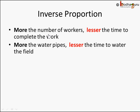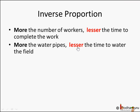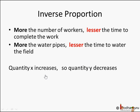Let me take this example. Say you are doing some work. If you have three people to do it, it will take some time. If you had six people, will it take more time or less time? It will take less time. Same way, if you had one pipe, it takes some amount of time to water the field. If you had two water pipes, you can finish it in half the time. So more the pipes, lesser the time. More the number of workers, lesser the time to complete the work. More is the speed, lesser is the time to travel — more is the speed of the car, lesser is the time to travel. So in these examples, quantity X increases and quantity Y decreases.